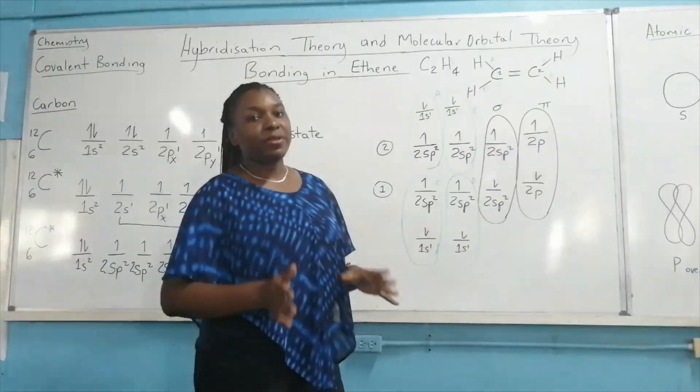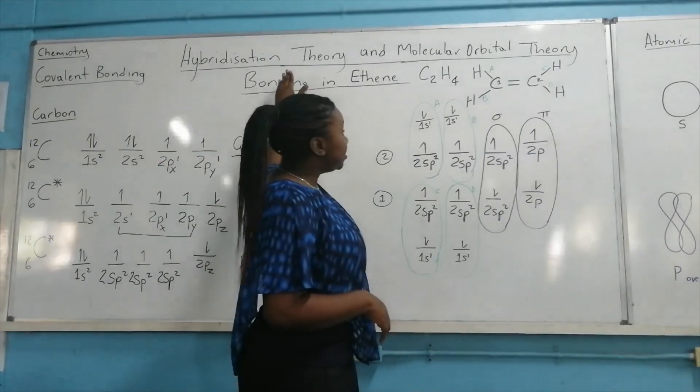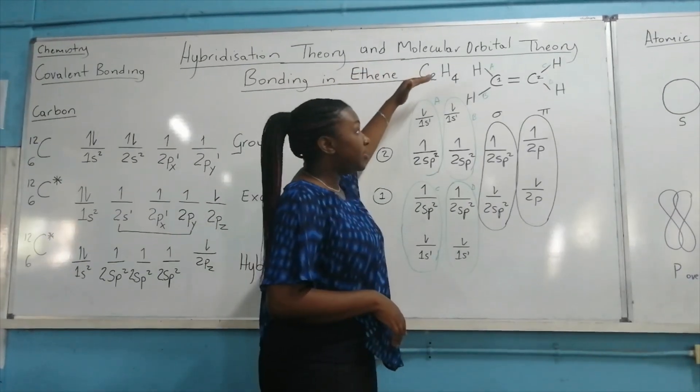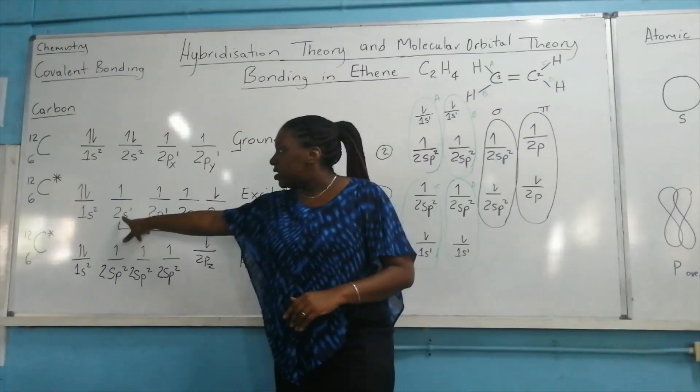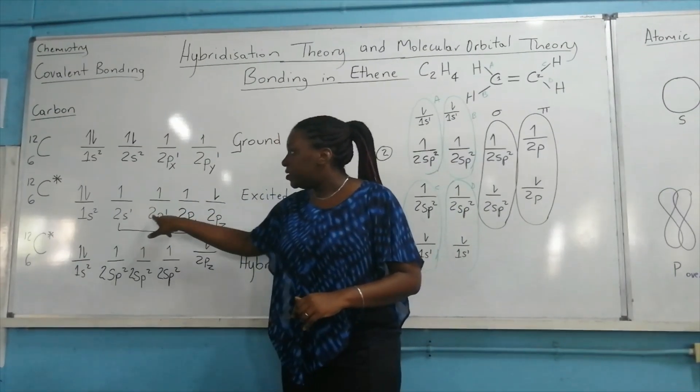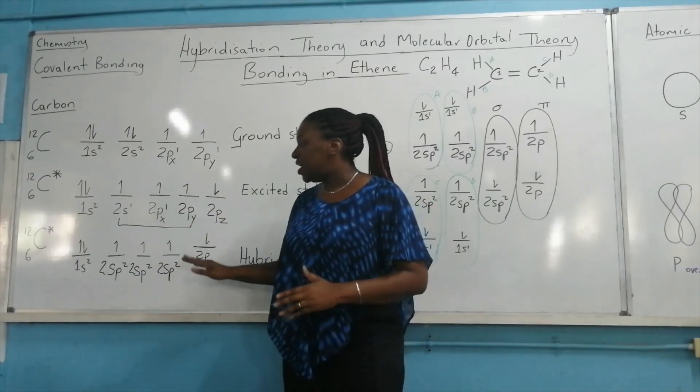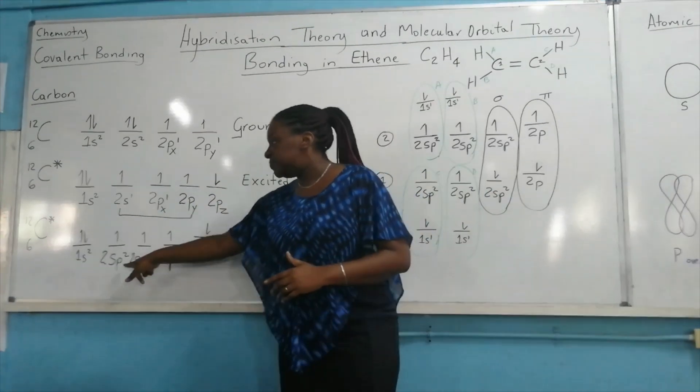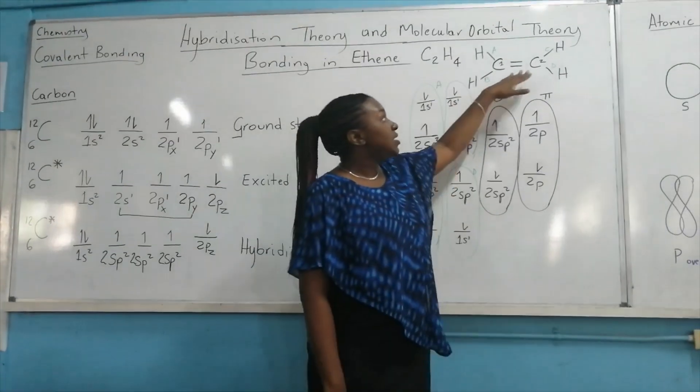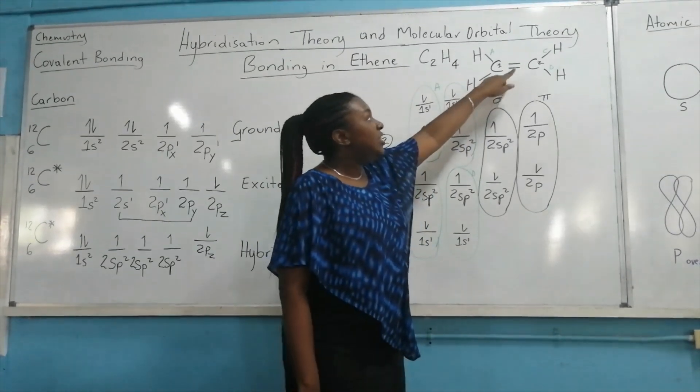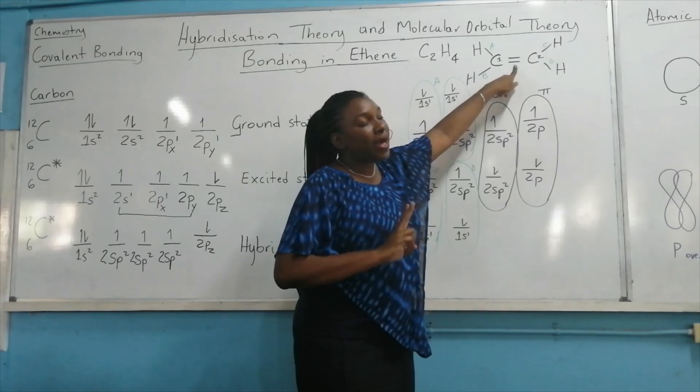To be very clear about the bonding in ethene, in terms of the hybridization theory and the molecular orbital theory, let us just recap. Over here, we see where we have the 2s orbital merging with two of the 2p orbitals, and we form three new hybridized atomic orbitals called sp² hybridized atomic orbitals. So if we're supposed to represent the bond in ethene, this double bond right here is formed from a sigma bond and a pi bond.